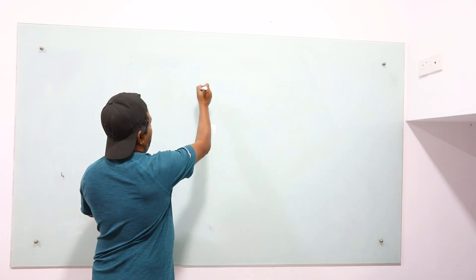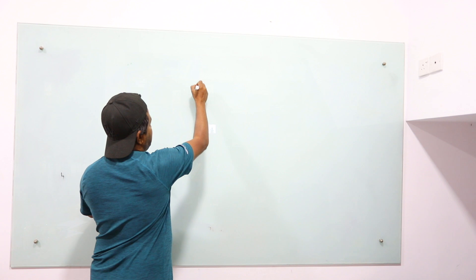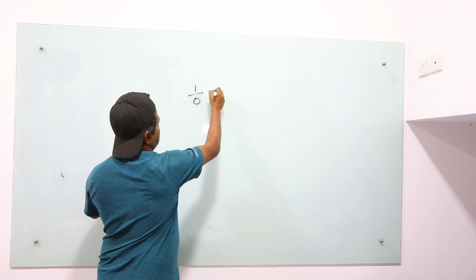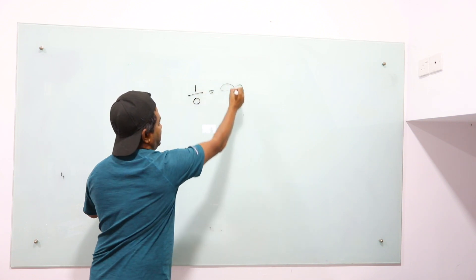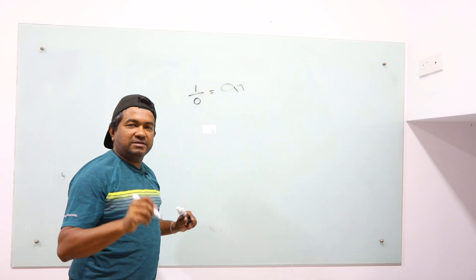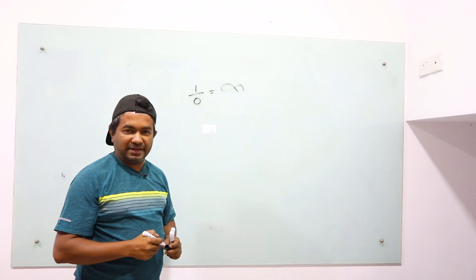But why do computers not take that? Okay, that's the example. So if you take any number divided by 0, we consider this as infinite, right? But in a computer, we do not consider it like that. Why?